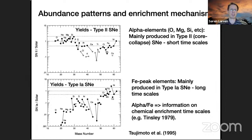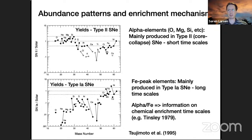This is of course a very simplified picture. There are other enrichment mechanisms than just Type Ia and Type II supernovae. Type II supernovae are not just one type of event — it depends on the mass, chemical composition, and probably things like the rotation of the progenitor star. There is also some discussion about whether Type Ia supernovae are really a homogeneous class of objects.